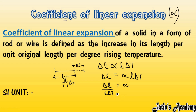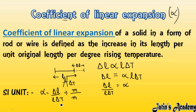Now we find the SI unit of the coefficient of linear expansion, alpha. Since alpha equals delta L divided by L times delta T, we substitute the SI units: delta L is in meters, L is in meters, and delta T is in Kelvin. The meters cancel with each other, leaving us with one over Kelvin. Therefore, the SI unit of alpha is per Kelvin.